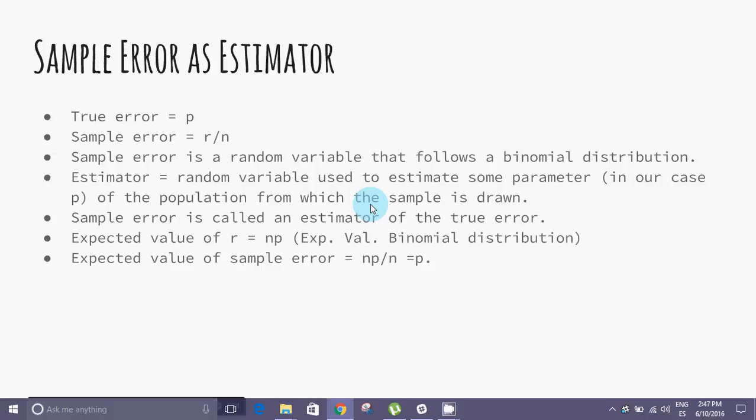At this moment we have a question: What is the best estimate of the accuracy for a future example drawn from the same distribution? If the expected value of the sample error is n times p over n, which is p, then the best estimate of the true error is the sample error.